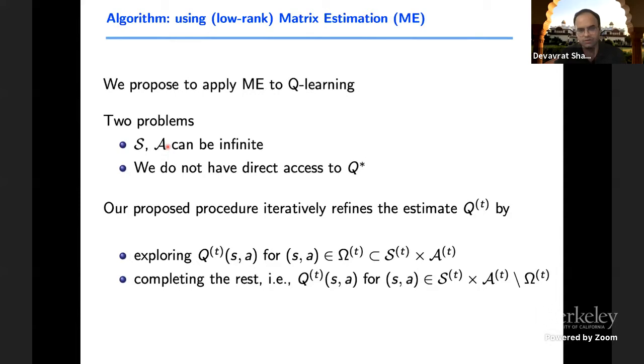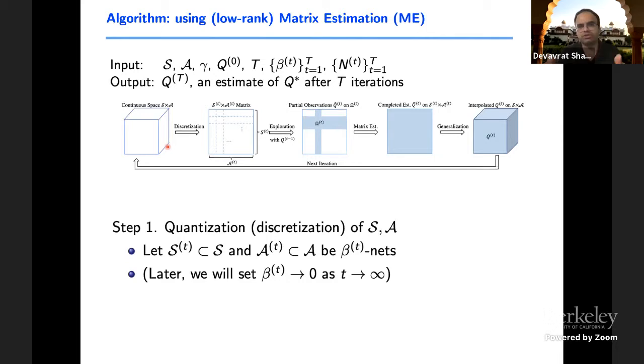That means that by having to estimate, let's say n by n entries, there's n square entries, we needed access to only order n entries. So the question is, why not apply that as an approach? The few challenges are that we don't have direct access to Q star, because that's what we're trying to estimate. And that recursively depends on each other. And second is the state and action spaces are not finite. So we need to somehow figure out iteratively refine and achieve this. And that's precisely what we do.